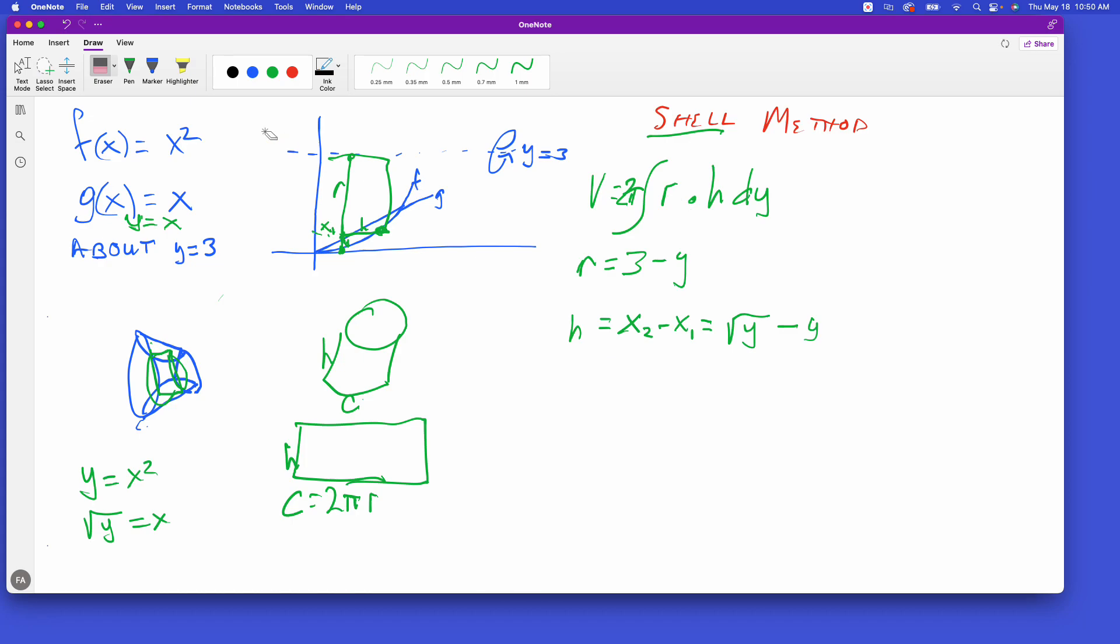We can go back up here and we have both of these equations now in terms of y. Now we can rewrite this as 2π times the integration from somewhere to somewhere. We still need to figure those values out, but we have our r, which is 3 minus y, and we have our h, which is square root of y minus y, and then dy.